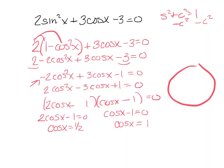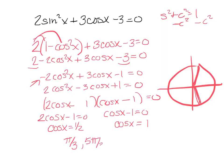From the second factor, I add 1 and get cosine x equals 1. Using the unit circle — cosine is the x value. For cosine x equals one-half, x is short and positive, so that's π over 3 or 5π over 3. For cosine x equals 1, the x value is 1, which happens at 0. So my answers are 0, π over 3, and 5π over 3.